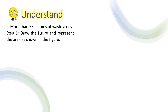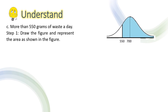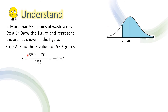For letter C, we find the probability that a person selected at random generates more than 550 grams of waste a day. For step 1, draw the figure and represent the area as shown. Since 550 is less than 700, then 550 is to the left of 700. Since we are solving for more than 550 grams, we shade the portion to the right of 550. For step 2, find the z-value for 550 grams: z = (550 − 700) / 155 = −0.97. This means 550 grams is 0.97 standard deviations below the mean of 700.